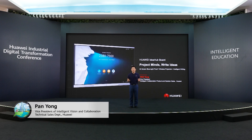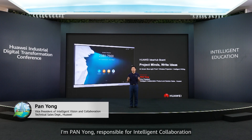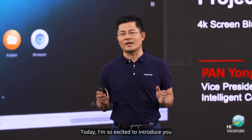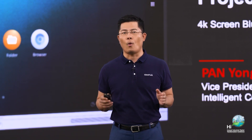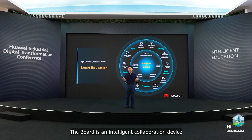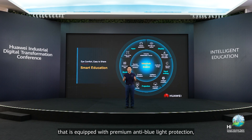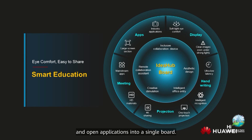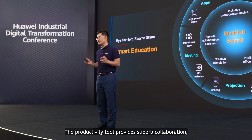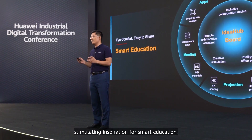Hello everyone, welcome. I'm Pan Yong, responsible for Intelligent Collaboration Product and Solution Sales at Huawei. Today I'm excited to introduce a new product dedicated for smart education: the Huawei IdeaHub Board. The board is an intelligent collaboration device equipped with premium anti-blue light protection, helping to protect your eyesight. It combines smart writing, wireless projection and open applications into a single board, providing superior cooperation and stimulating inspiration for smart education.